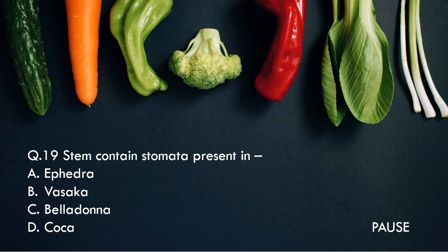Question 19: Stem contains stomata present in — option A, Ephedra. Option B, Vasaka. Option C, Belladonna. And option D, Coca. And the right answer is Ephedra. So stem contains stomata present in Ephedra.